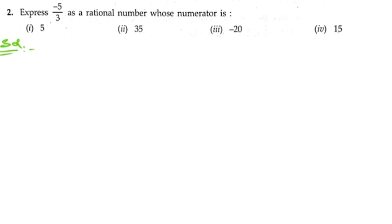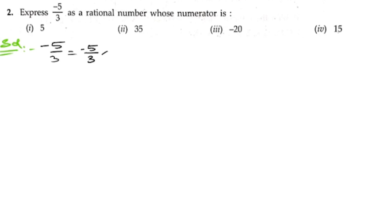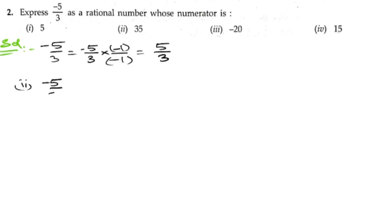In the solution, first we write down the given number: minus five by three. To make the numerator positive five, we need to multiply it with minus one by minus one. Minus into minus is plus, so five ones are five by three ones are three.